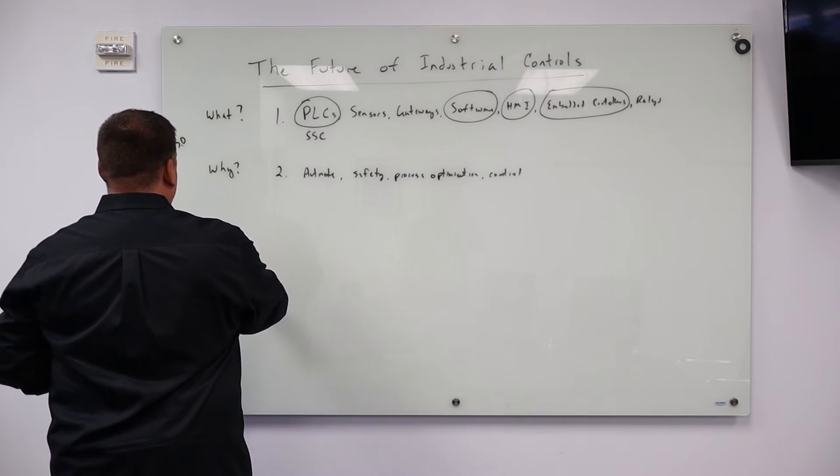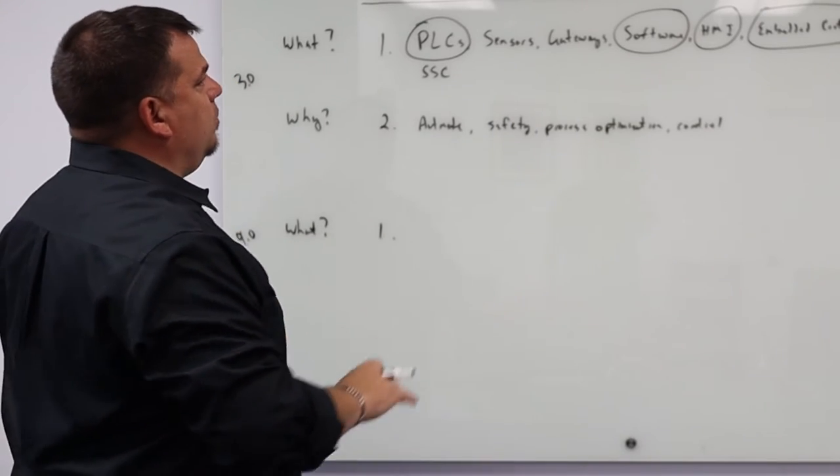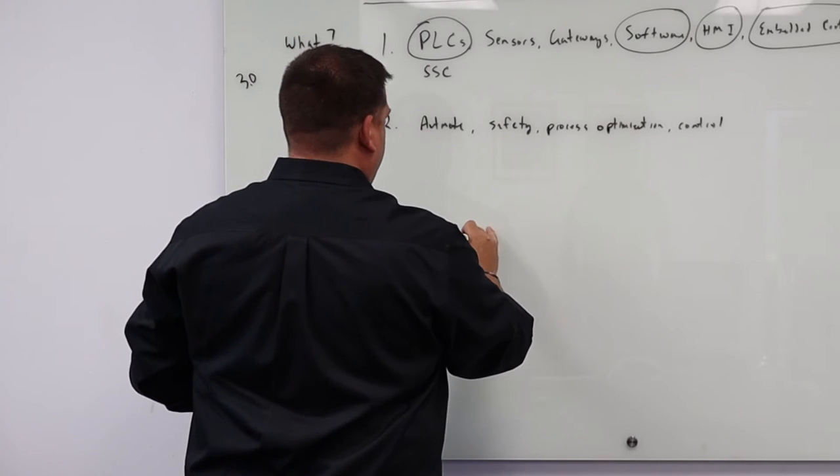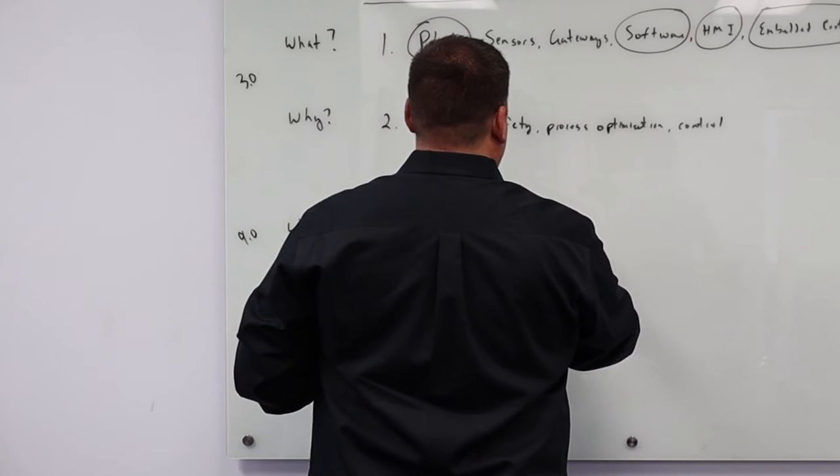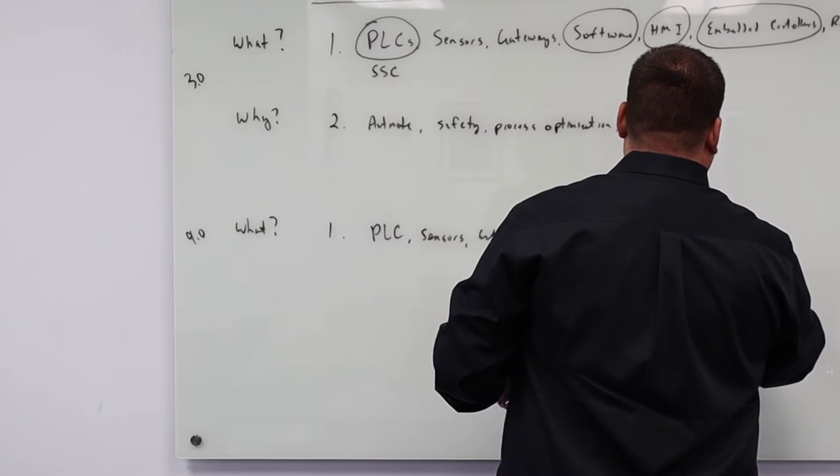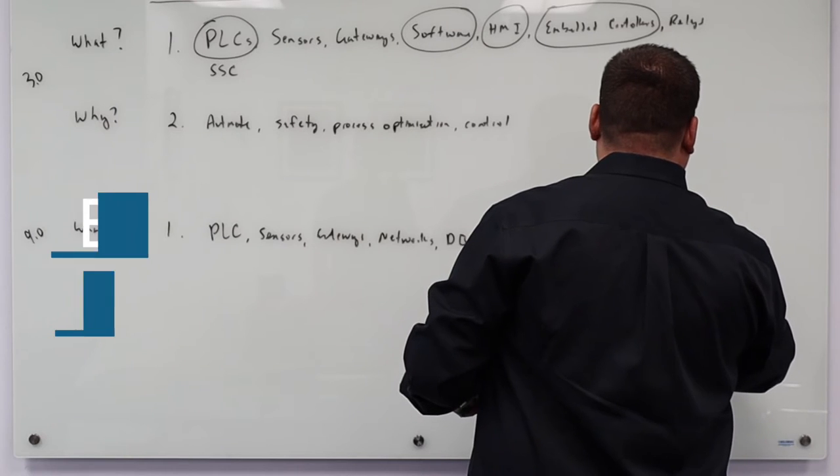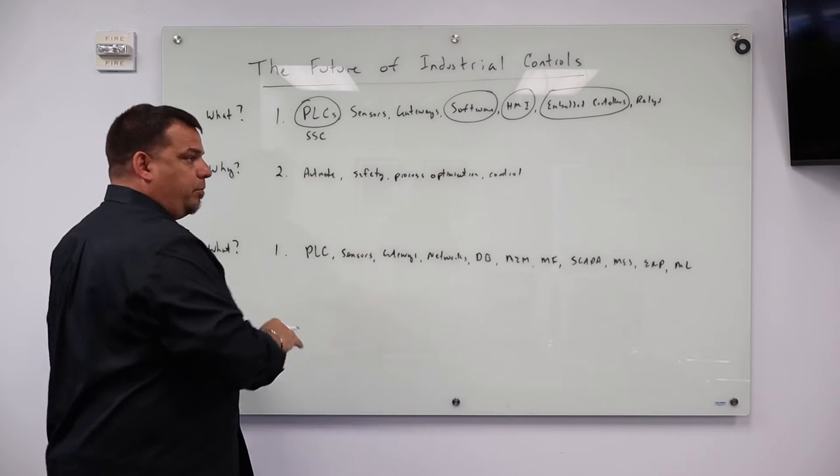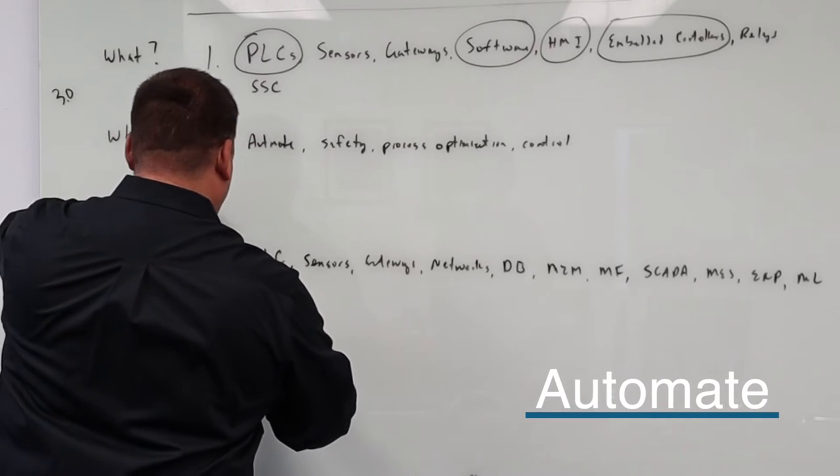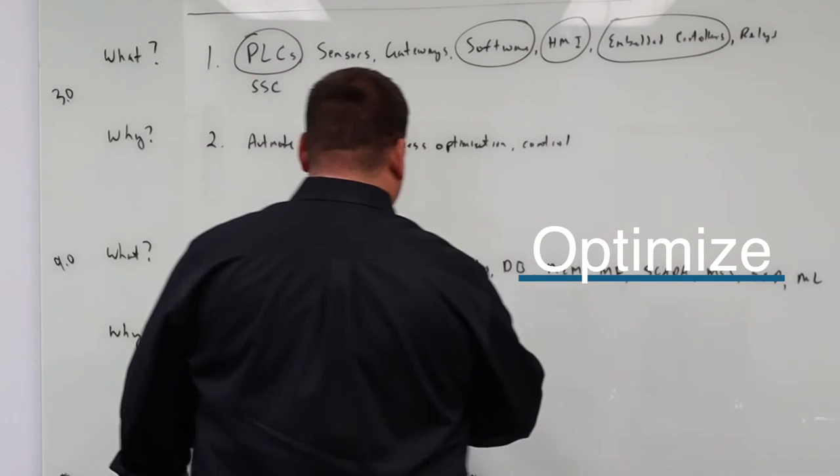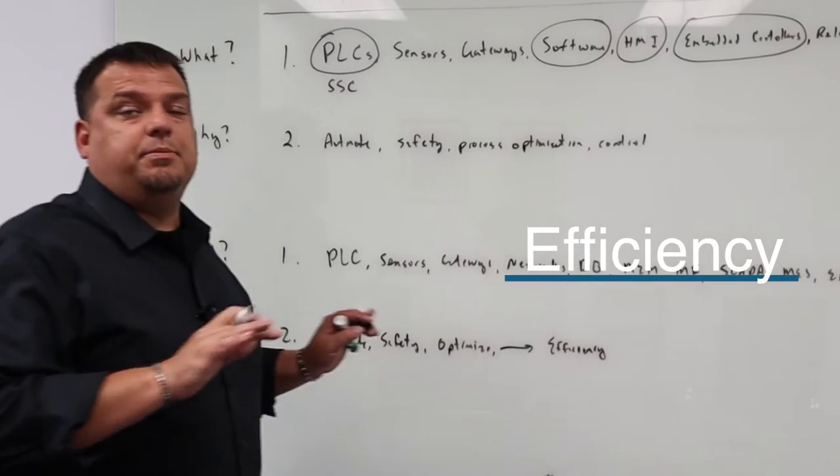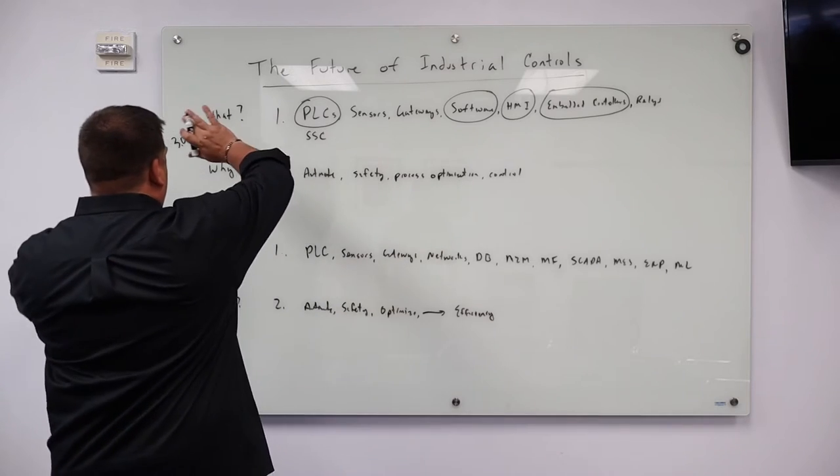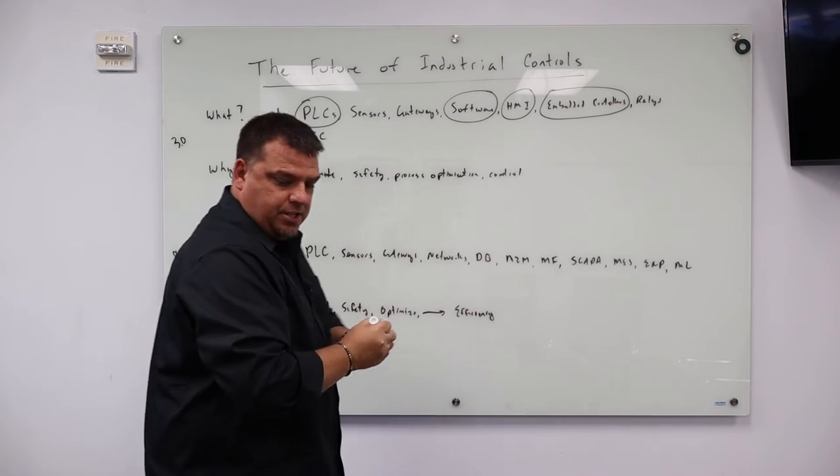So let's do the 4.0 what. Give me examples of what industrial controls are for Industry 4.0. Ethernet networks. Yep, so now the big thing that changes, you still have PLCs, you still have sensors, you still have gateways. Now you have networks, machine to machine, you have mainframes, now you have SCADA, now you have MES, now you have ERP, now you have machine learning. These are all components of industrial controls now in the Industry 4.0. That's the what. What's the why? So we still want to automate. We still want to do things safely. We still want to optimize. The big thing is we want to capture efficiency. We want to capture increased efficiency. We want to do more with less in a more competitive market. So fundamentally that's the change between 3.0 and 4.0 in terms of the ecosystem.